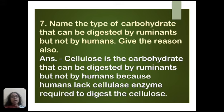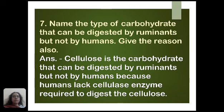Ruminants have a special type of stomach with bacteria that help them to digest cellulose. They also have cellulase, the cellulose-breaking enzyme, in their alimentary canal. On the other hand, human beings do not have the cellulase enzyme required to digest cellulose, so humans are not able to digest cellulose.